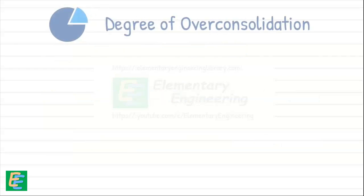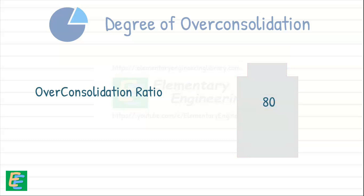The degree of overconsolidation is often quantified using overconsolidation ratio. This ratio provides a numerical value that indicates how much higher the past stress was compared to the current stress.